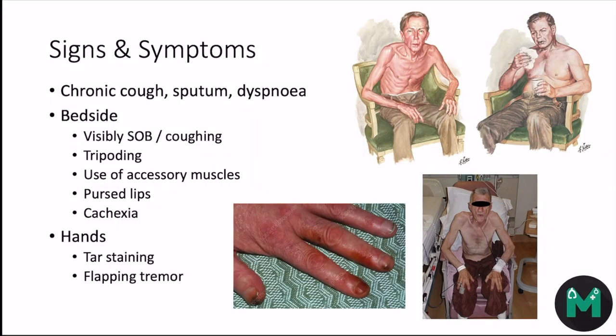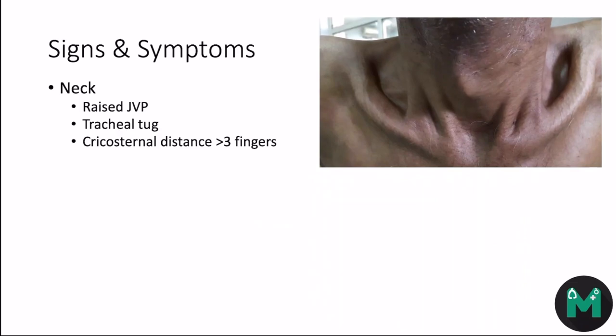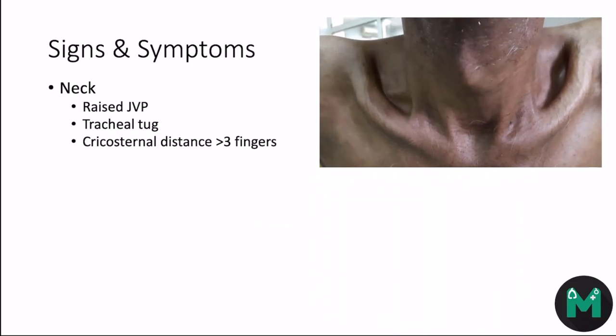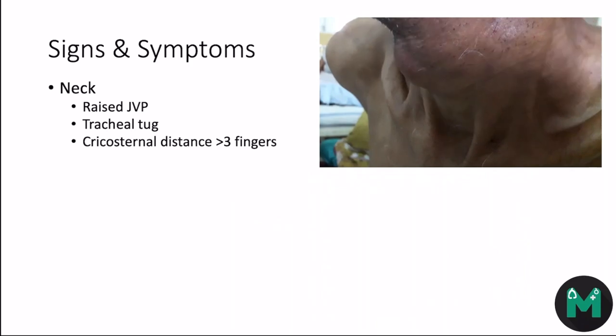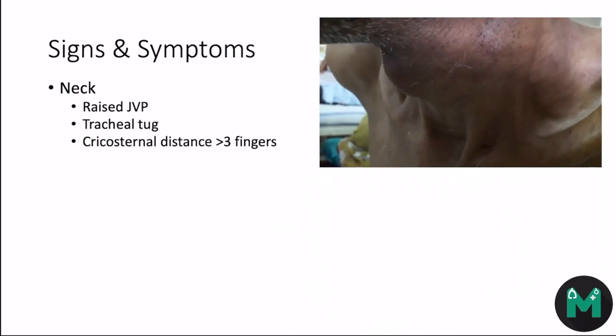Moving on to the hands, you may see tar staining from smoking and a flapping tremor, which indicates CO2 retention. In the neck, a raised JVP is a key sign indicating cor pulmonale. You may also observe a tracheal tug, where the trachea moves up and down with each breath, and clear use of accessory muscles.